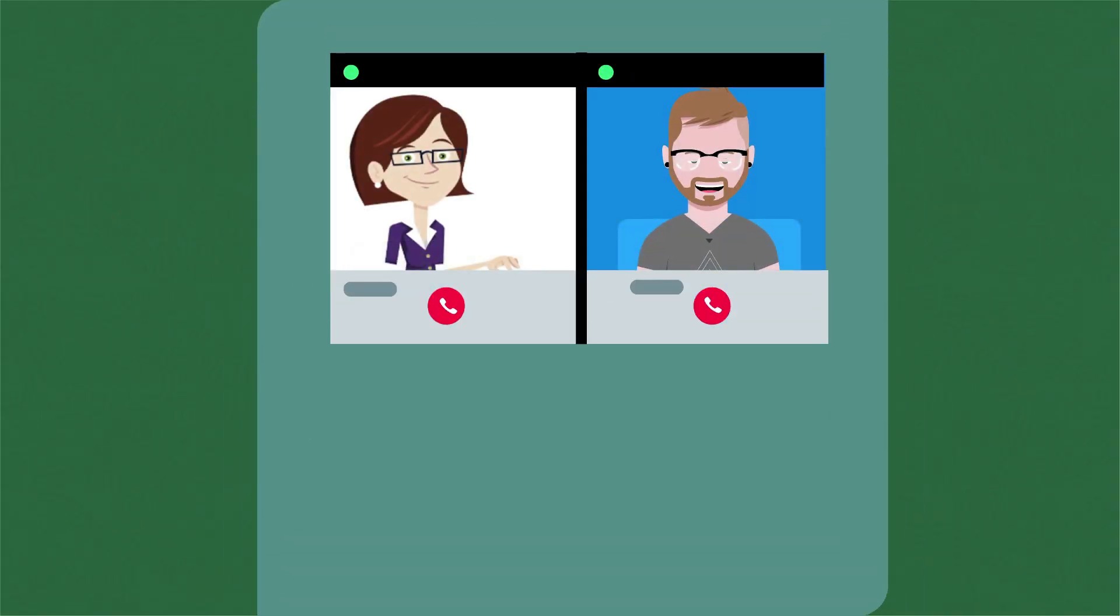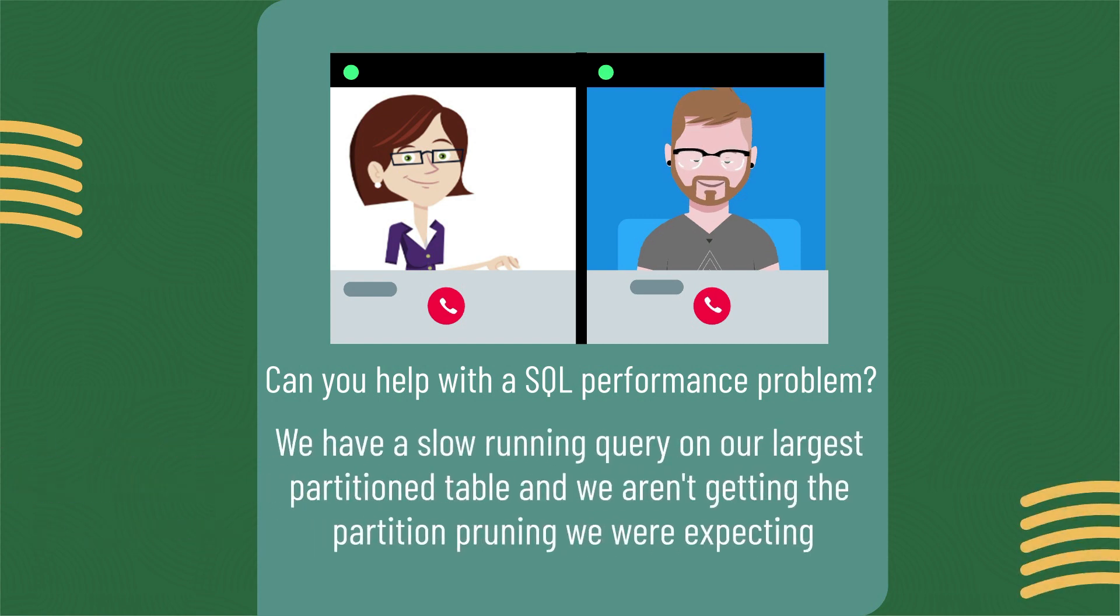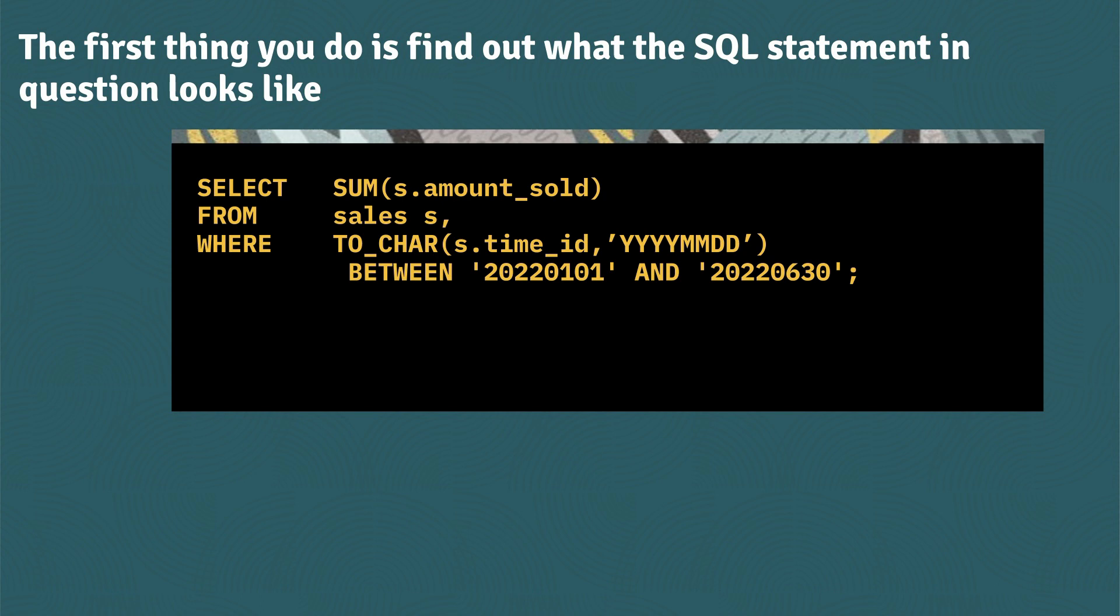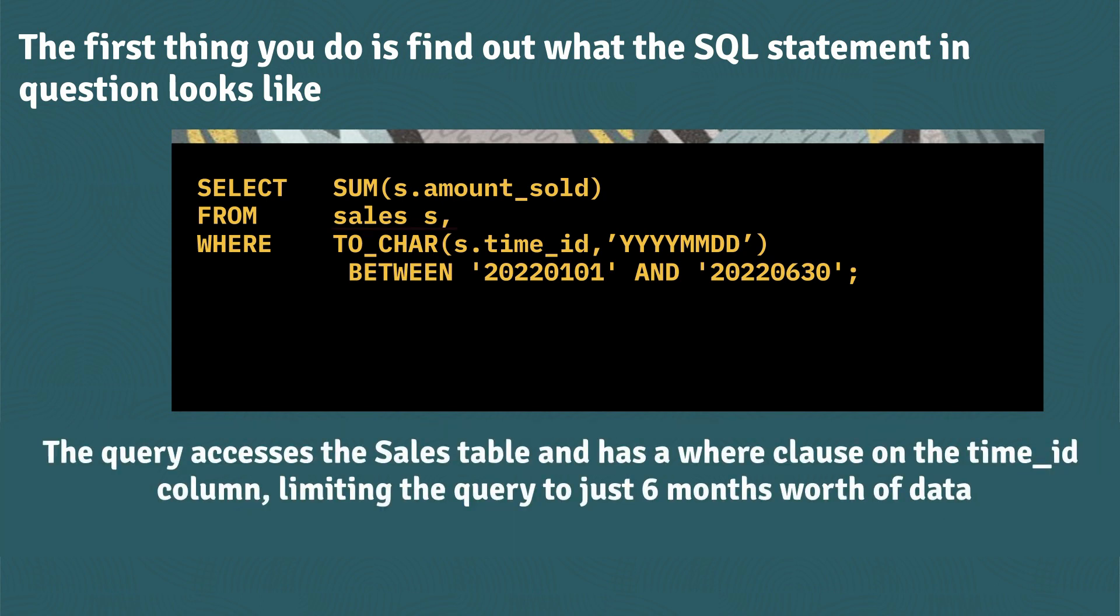Now imagine you've been called to help out with a SQL performance problem. Let's say we've got a slow running query on our largest partition table, and because we're not getting the partition pruning we expected, where do you start? Well, the first thing you want to do is find out what the SQL statement in question looks like. And in this case, it's a single table query against our sales table, our large table.